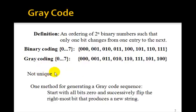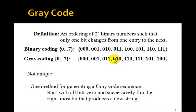Gray codes aren't unique, but one method of generating this sequence is to start with all bits 0 and then successively flip the rightmost bit that produces a new string. Going from here to here, we can change 0 to 1. Now we've got to go to the next bit because changing this back to 0 would give you what you had before. So now we change the second bit. But now we can change the first bit again because we get a new sequence. But now to get a new sequence, we have to change this third bit to a 1. But once we do that, we can get back to the least significant bit and change this 0 to a 1. Then we need to change the second bit to a 0. And now we can go back to the first bit to become a 1. So that's one way of doing it.